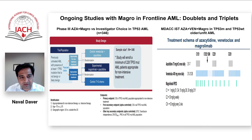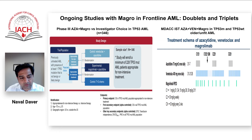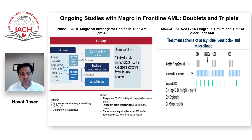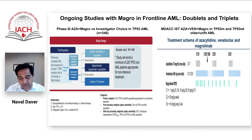Among the immunotherapies, the most exciting at this time is a CD47 antibody called magrolimab. This is being evaluated in a phase 3 frontline randomized placebo-controlled study, comparing azacitidine-magrolimab versus azacitidine-venetoclax or 7+3. The idea is that azacitidine-magrolimab will improve both remission rates and survival compared to investigator choice therapy. This is based on data from the ongoing single-arm phase 1b study showing that azacitidine-magrolimab can generate up to 70% remission and greater than 12 months survival in TP53-mutated AML.